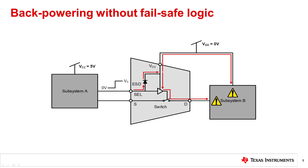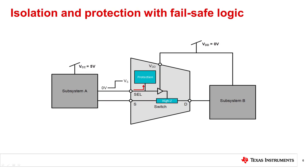Unwanted currents can flow through the open switch and might damage the signal ports on subsystem B. A TI switch with fail-safe logic will maintain a high impedance state on the signal path and digital logic pins when the switch supply is unpowered. The internal protection will prevent current from flowing into VDD. Thus, the switch and subsystem B remain protected.